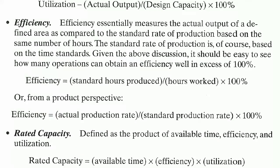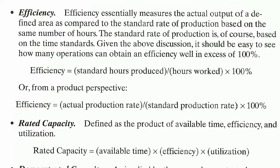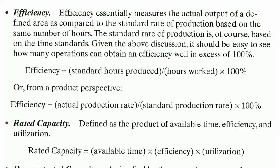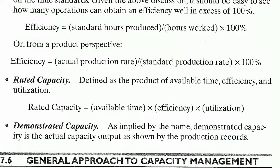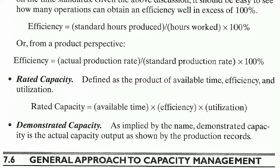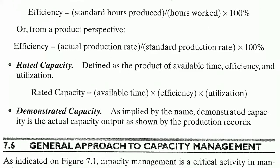It should be easy to see how many operations can obtain an efficiency well in excess of 100%. Efficiency equals standard hours produced divided by hours worked, multiplied by 100%. From a product perspective, efficiency equals actual production rate divided by standard production rate, multiplied by 100%. Rated capacity is defined as the product of available time, efficiency, and utilization: rated capacity equals available time multiplied by efficiency multiplied by utilization.